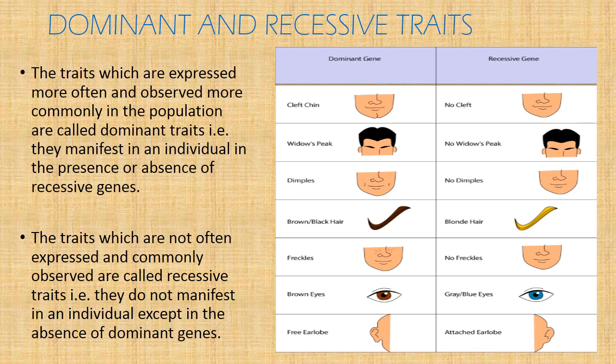Examples of dominant traits on the slide include cleft chin, widow's peak, dimples, brown or black hair, freckles, brown eyes, and free earlobes. These are traits that are usually common in a population. While recessive traits are those traits which are not often expressed or commonly observed in a population. They do not manifest in an individual except in the absence of dominant genes. Examples of recessive traits on the slide include no cleft chin, no widow's peak, absence of dimples, blonde hair, absence of freckles, grey or blue eyes, and attached earlobes.